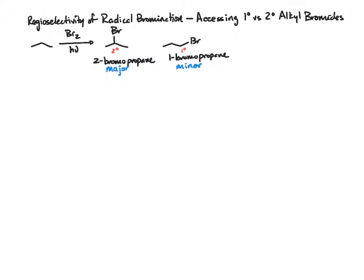We know under these conditions that the secondary alkyl bromide is formed because the mechanism proceeds through a secondary radical, which is more stable than a primary radical.